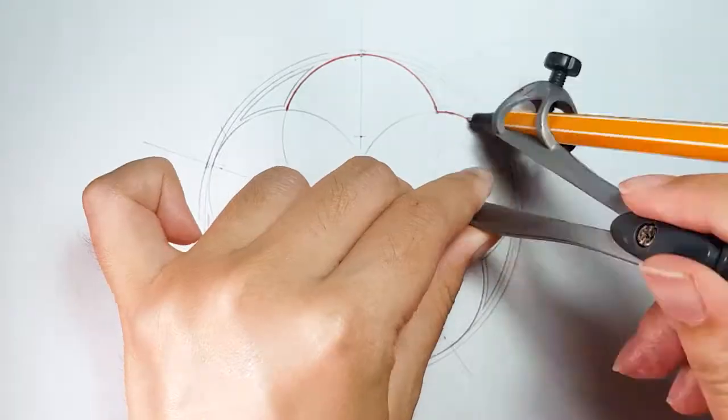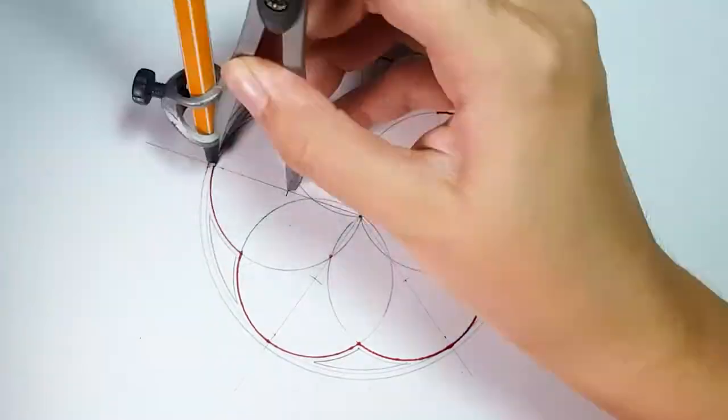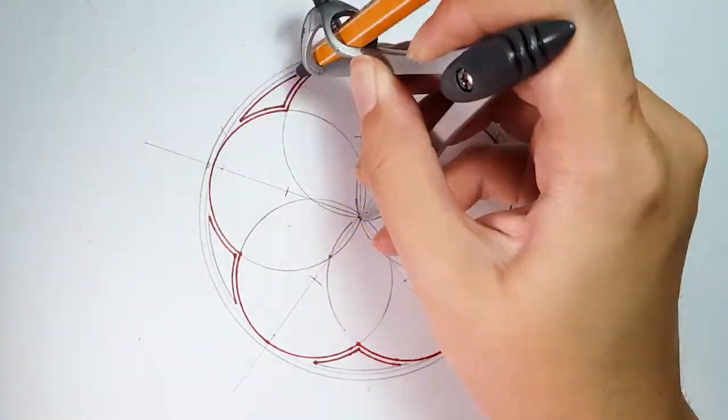Now, use your pen with a compass to draw an outline based on the pencil drawing as shown in the video. Overlap areas are not to be drawn.